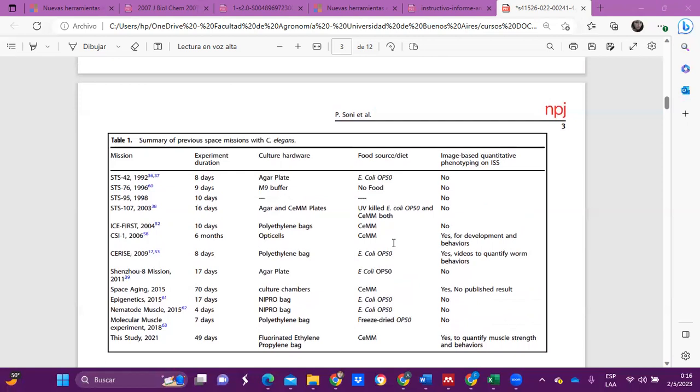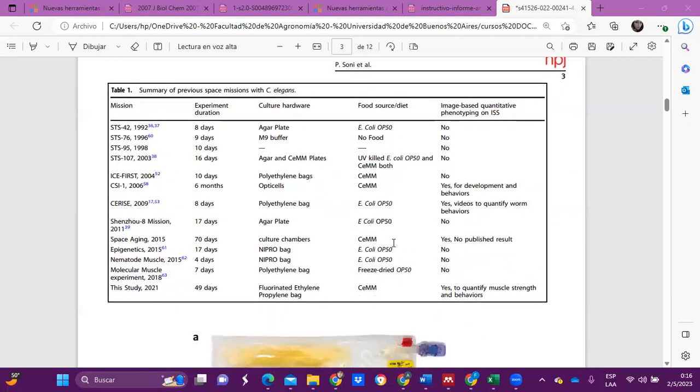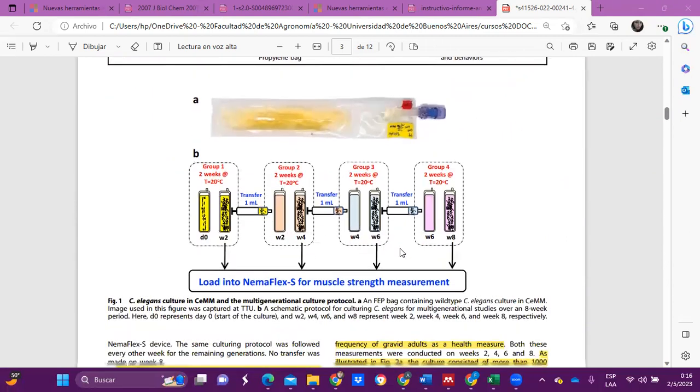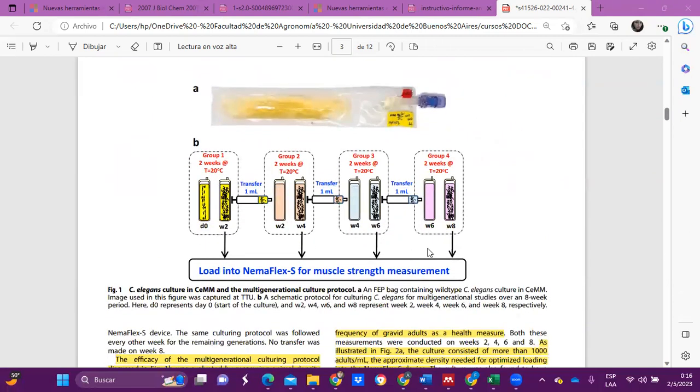In addition, the culture vessels used to maintain C. elegans could impact their growth. Therefore, there was a need to optimize culture protocols in this medium and in spaceflight-compatible culture vessels to achieve consistent culture densities across multiple generations. In this view, you can see a schematic culture protocol for multi-generational studies in C. elegans.